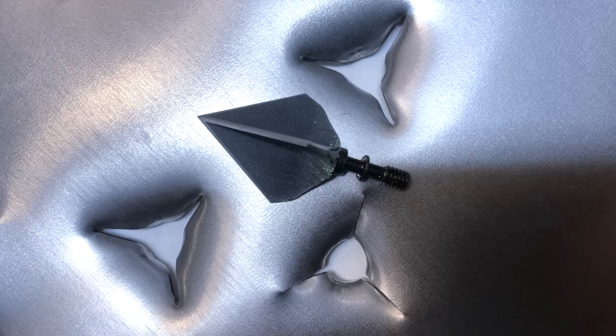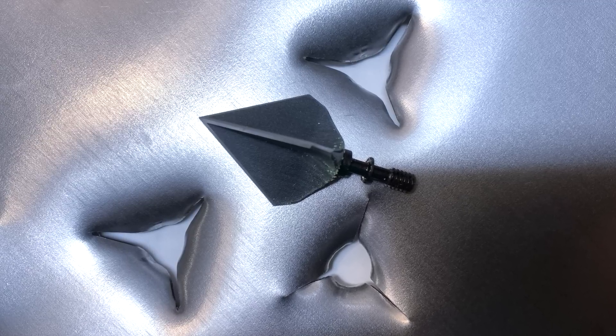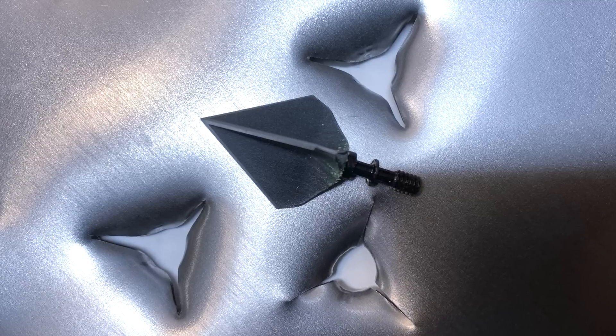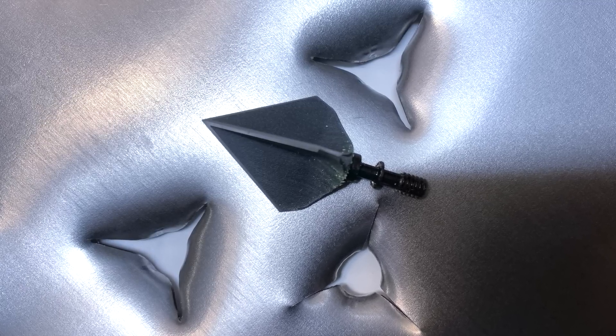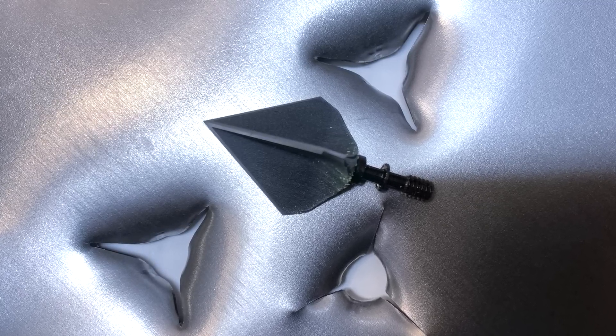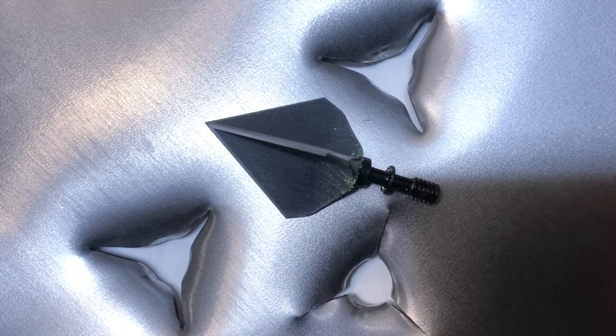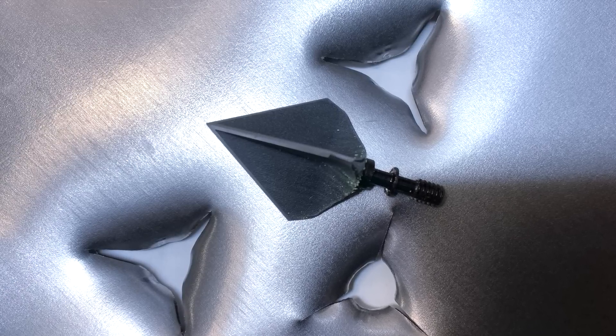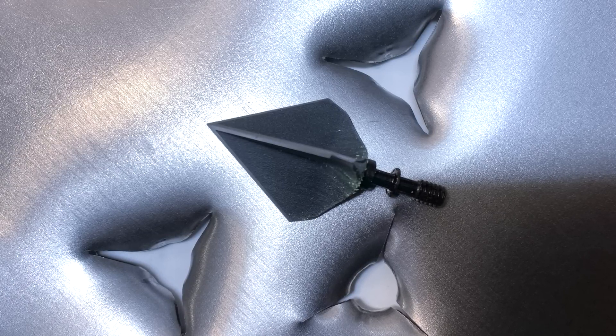And if you compare those holes to the hole below it, which just so happened to be there, that's a more classic three blade head where there's just kind of the circular ferrule and then three slits. I mean, look at the difference in the surface area that's displaced in the steel plate.